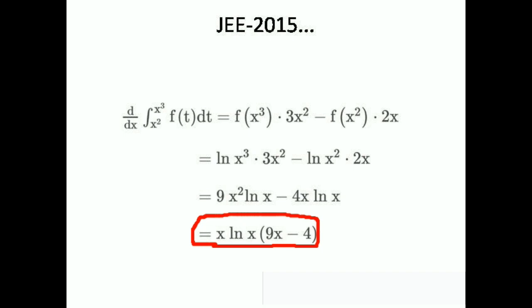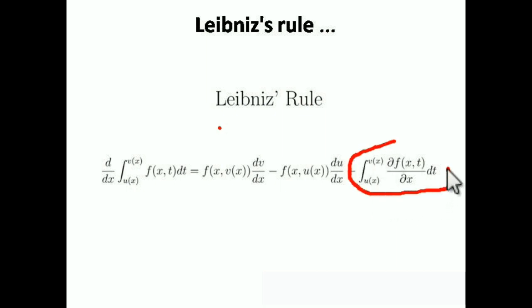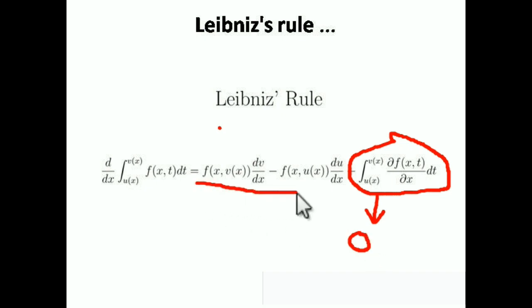The most important thing is to know the formula, so keep remembering it. This is sometimes known as Newton-Leibniz formula, sometimes just Leibniz formula. To recap: d/dx of ∫[u(x) to v(x)] f(x, t) dt equals upper limit in the function multiplied by differentiation of the upper limit, minus lower limit in the function multiplied by differentiation of the lower limit, plus the partial differentiation term — which in 99% of JEE Main and Advanced cases becomes zero. So focus on just the first two terms. That's all for today's video — if you liked it, don't forget to share it and hit the subscribe button. Thank you.